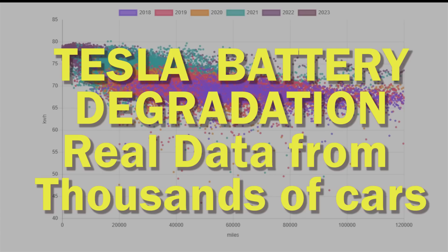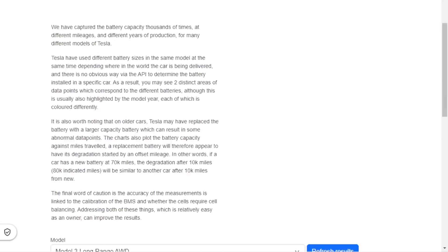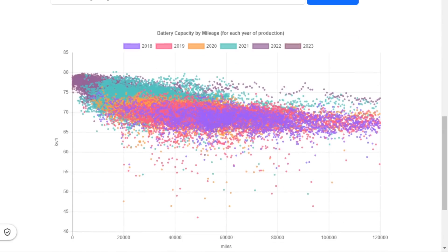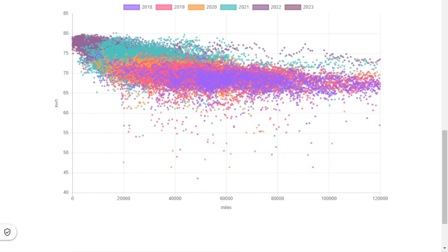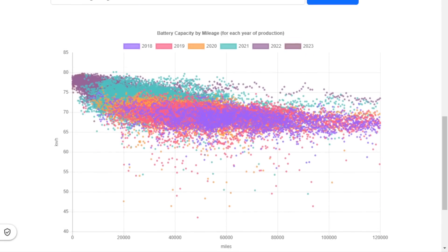Welcome to Tesla Info and today we're going to look at battery degradation, taking the data we've collected from thousands of cars and thousands of data points. We'll add some bookmarks to the video so you can jump to the cars you're interested in, and we're going to cover Model 3, Model Y, Model S, Model X, and even some of the older cars later on in the video.